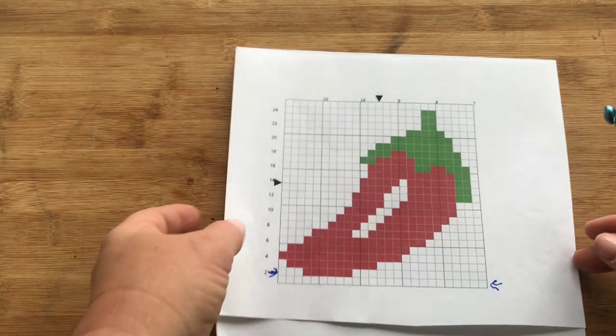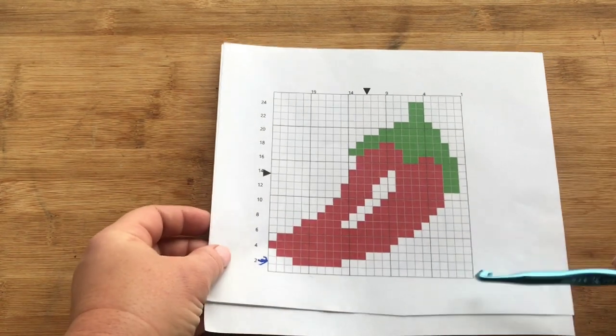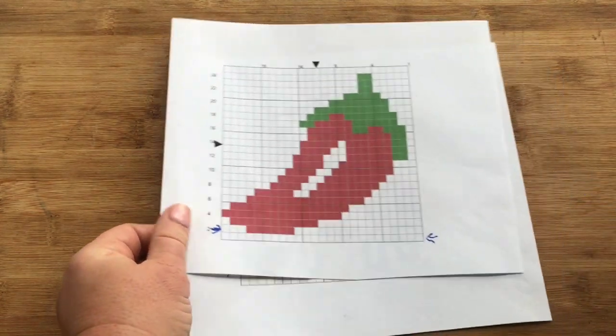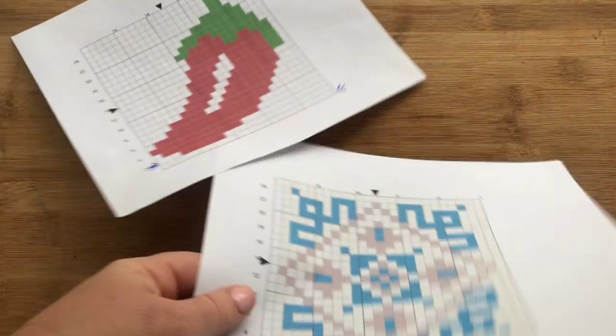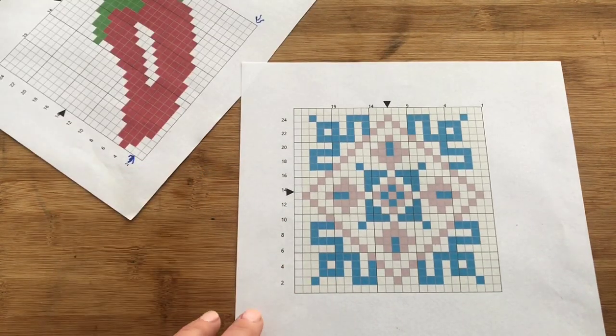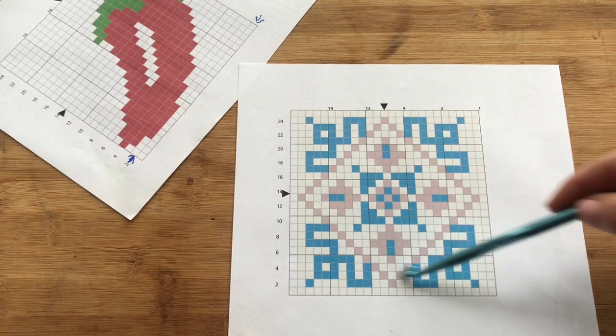Everybody has a different tension, and it really helps to figure out how big your blanket's going to be by using the calculator. I'm also going to make a row by row calculator so you can do the same thing if you're working your graph row by row.